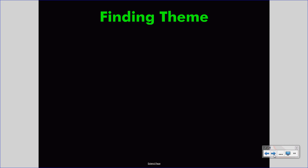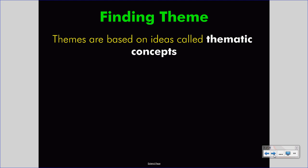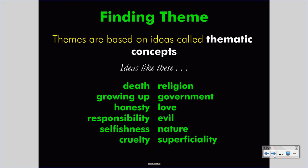Let's think about finding theme — a statement like 'slow and steady wins the race' or 'moderation is good.' You start with what we call a thematic concept. A thematic concept is the part of human nature that we're talking about. It could be love, honesty, responsibility, or growing up. Many authors want to talk about death, selfishness, nature and the natural world, or perhaps religion and the role of government toward individuals.